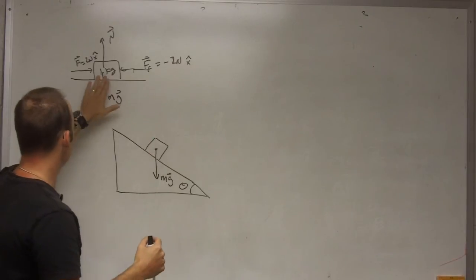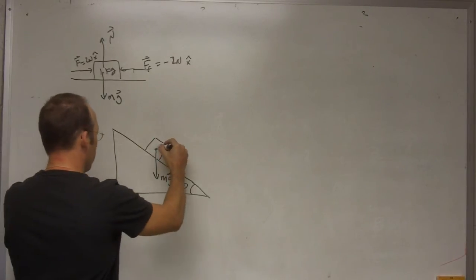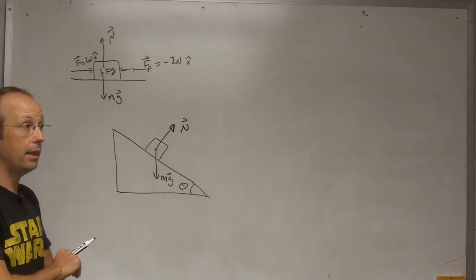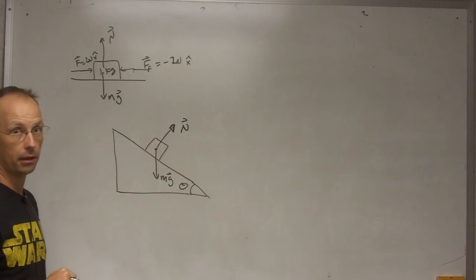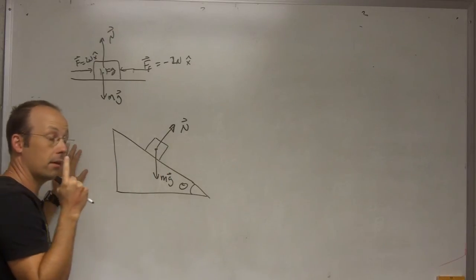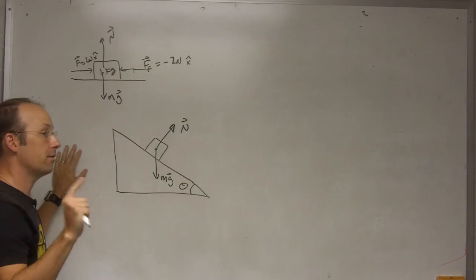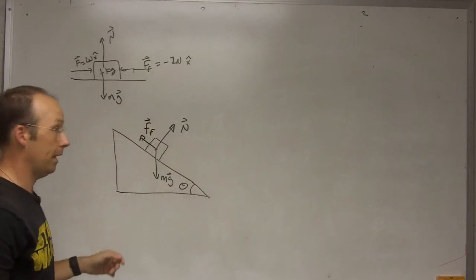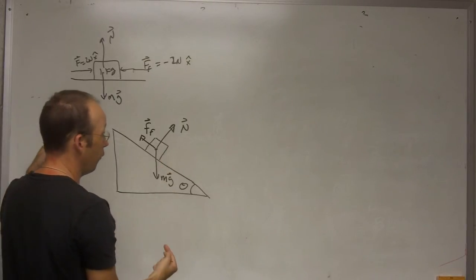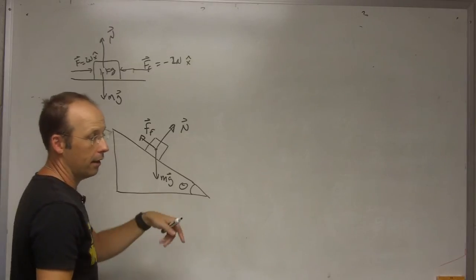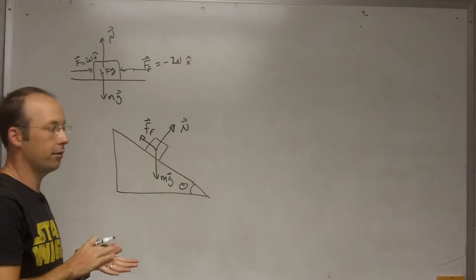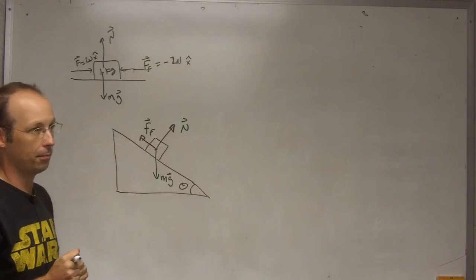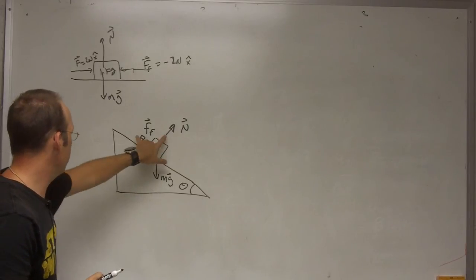The plane can push on the block perpendicular to its surface — we call that the normal force, where normal means perpendicular. It can also exert a frictional force parallel to the plane. The frictional force is going to be in whatever direction it needs such that the object doesn't slide, so in this case the frictional force would be directed up the plane. It always opposes the desired change — the frictional force tries to make the thing not move. So there's my free body diagram: two forces from the plane and one from gravity, and it's at equilibrium.